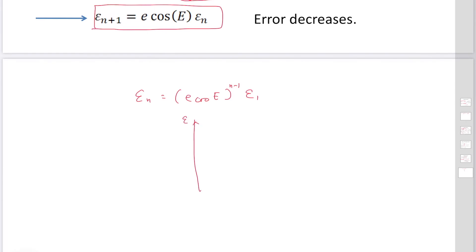So Epsilon has a vertical line and the horizontal line is the number of the step. Epsilon 1 is the original error. It looks like decreasing because E is smaller than 1. So error is decreasing. We could safely use this method. If we repeat the same calculation a number of times, our solution is very close to the real solution. This is the end of this session.